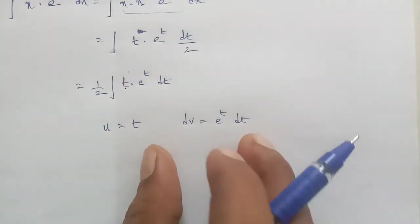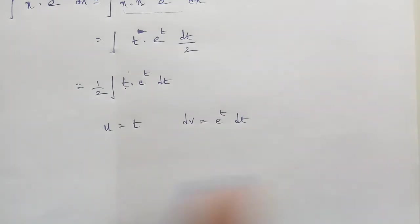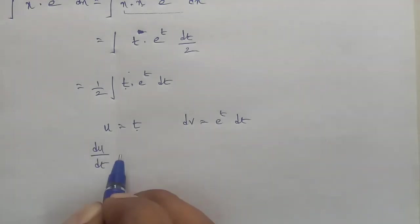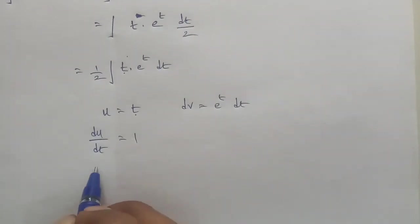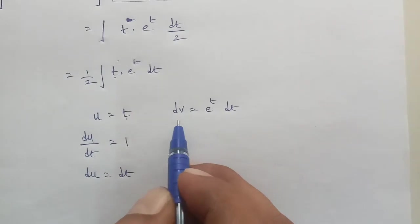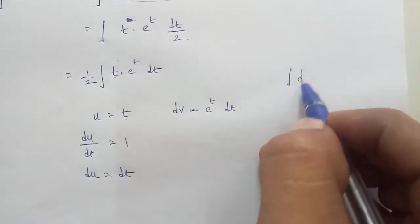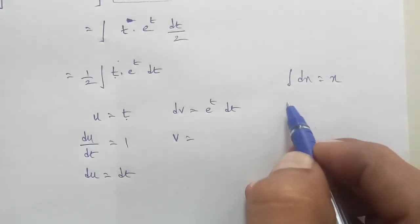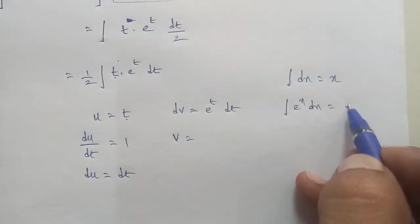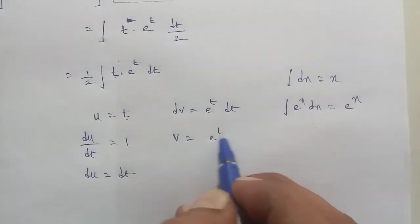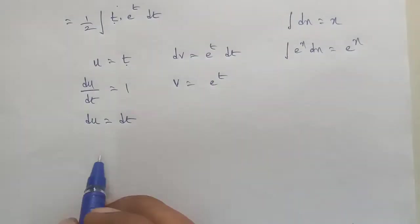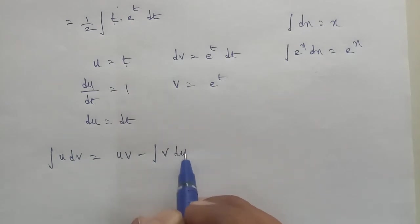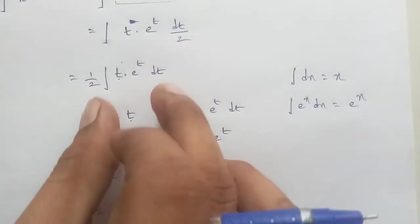Differentiating u with respect to t, du is equal to dt. Integrating dv, v is equal to e to the power t, since the integral of e to the power x dx is e to the power x. The integration by parts formula is: integral of u dv equals uv minus integral of v du.